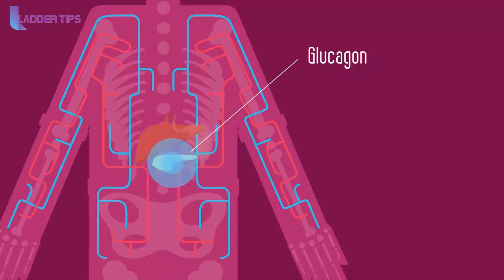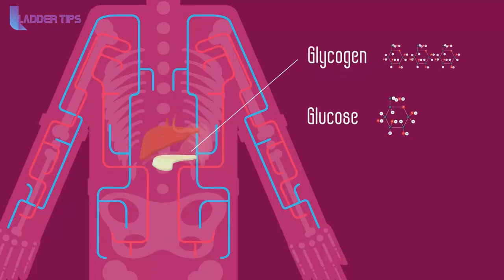Like insulin, the target organ for glucagon is also the liver, though it stimulates the opposite process: the breakdown of glycogen into glucose. This increases your blood glucose level back to its optimal state.